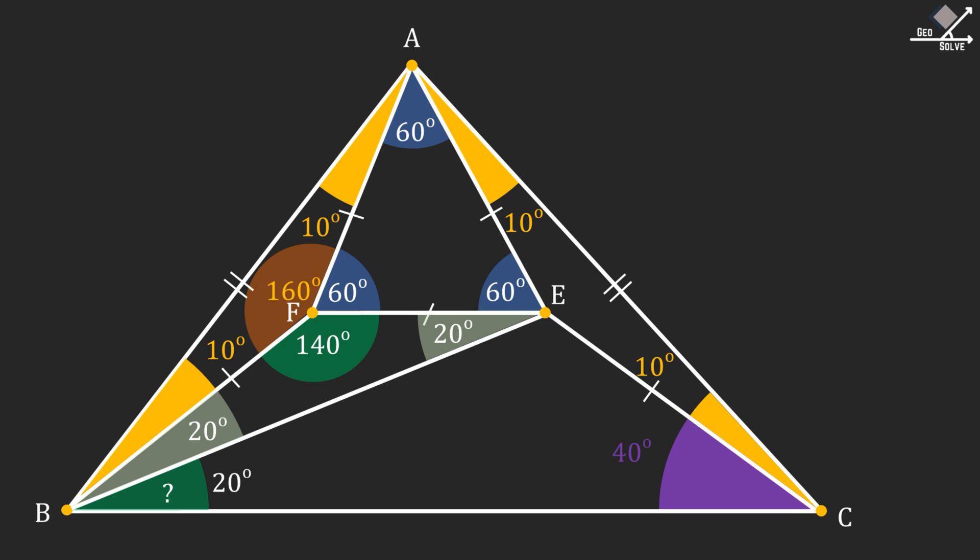Since we showed that triangle FBE is an isosceles triangle, we can calculate the base angles as 20 degrees each. And that gives us the angle we are looking for, which is also 20 degrees. I'll see you next time.